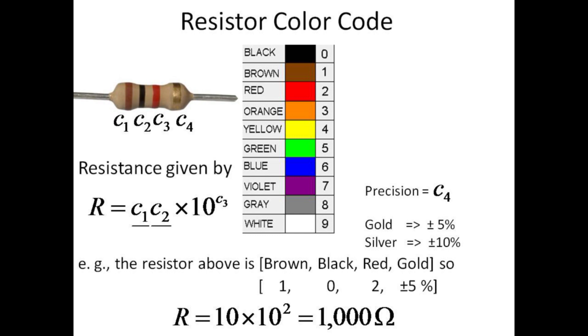As an example, the resistor shown in the picture above has brown, black, red, and gold. This indicates a resistance of 10 times 10 raised to the second power, or 1,000 ohms, with a precision of 5%.